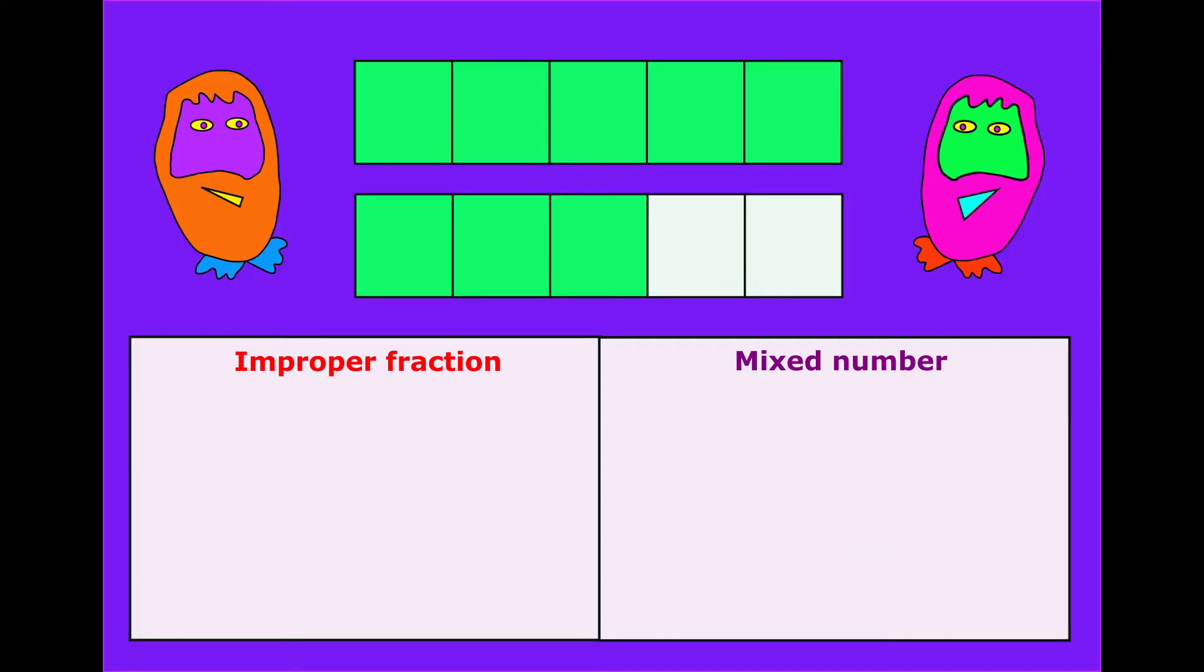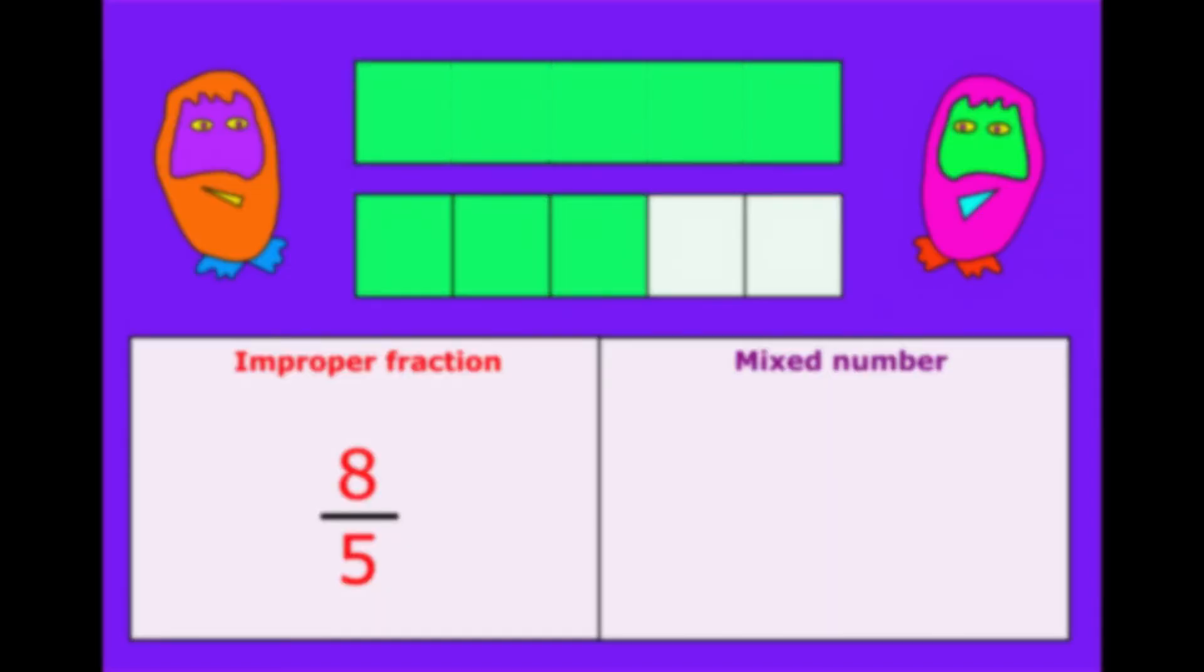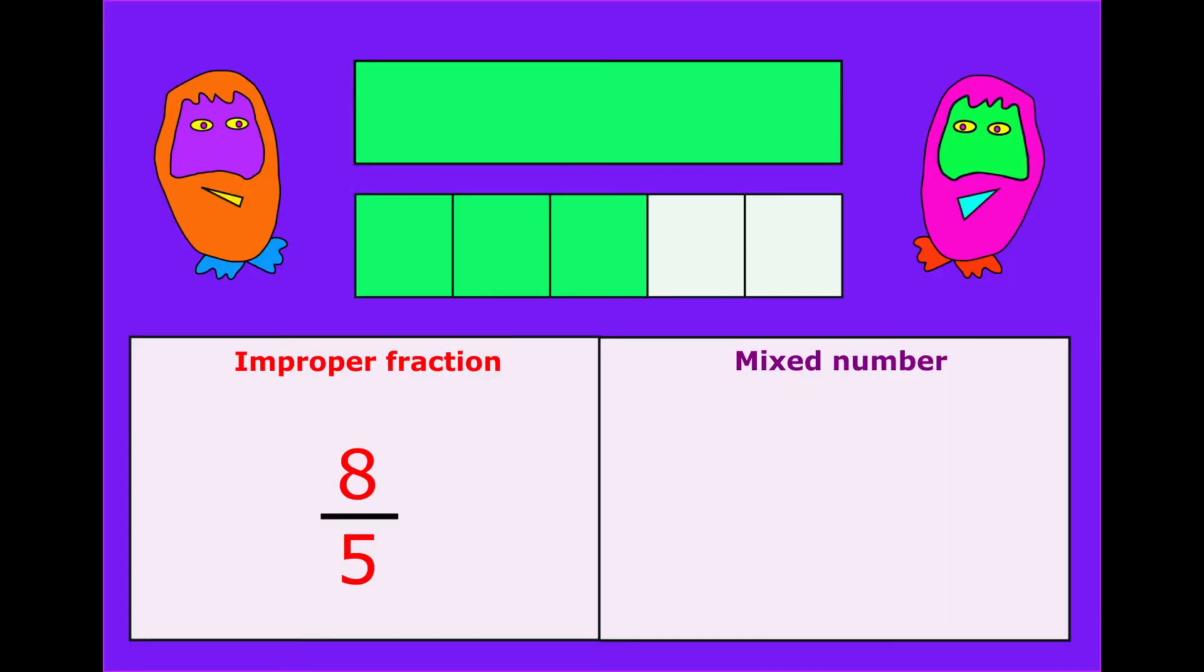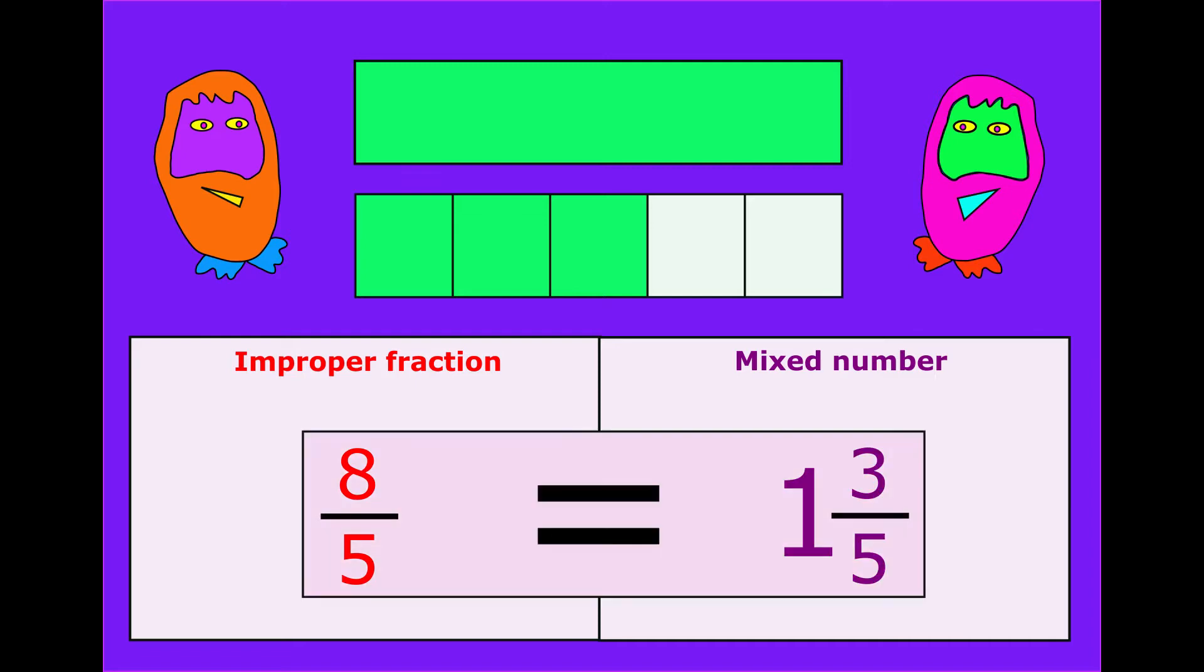Here we have five fifths or a whole and an extra three fifths. Altogether, eight fifths, and that's the improper fraction. Or we could say that five fifths at the top, well, that's a whole. So we have one whole and three fifths, and that is the mixed number. In this example, eight fifths and one and three fifths are worth the same amount, just different ways of writing them.